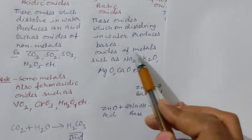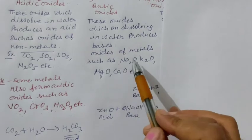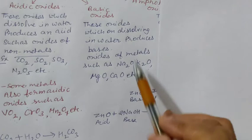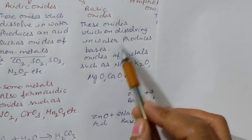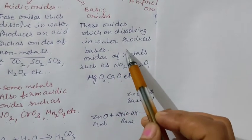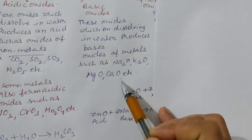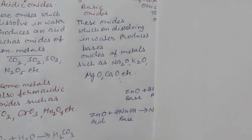Oxides of metals such as Na2O, K2O, MgO, CaO, etc., which are called basic oxides. For example,